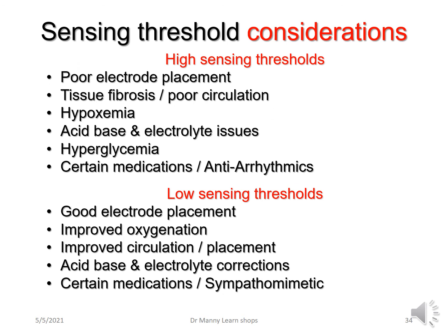Sensing threshold considerations: high sensing thresholds are caused by poor electrode placement, tissue fibrosis or poor circulation to the myocardium, hypoxemia, acid-base and electrolyte issues, hyperglycemia, or antiarrhythmic medications such as amiodarone. Low sensing thresholds mean things have improved — good electrode placement, improved oxygenation and circulation, corrected acid-base and electrolyte derangements, and sympathomimetic medications such as epinephrine, dopamine, or dobutamine.